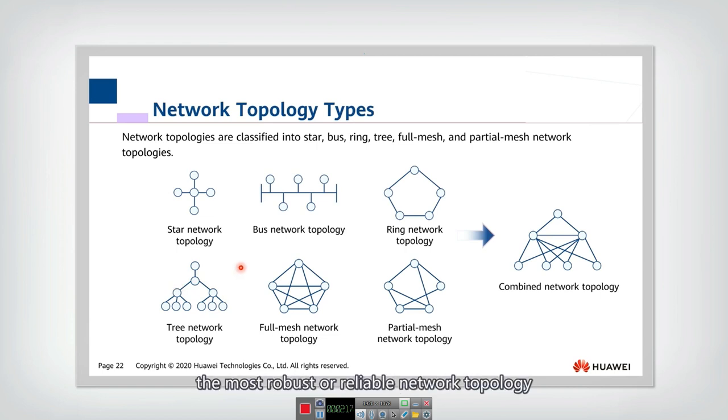The most robust or reliable network topology is the full mesh network. So you can see that in full mesh network any two nodes will have an edge, will have a link to connect between each other. So you can see that if one link is corrupted then the node can still communicate through other links. So in this mesh network the robustness is very good.